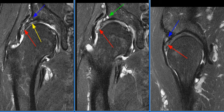These MR findings are consistent with labral hypertrophy and tear and mild developmental dysplasia of the hip.